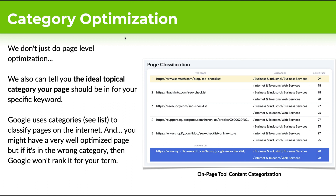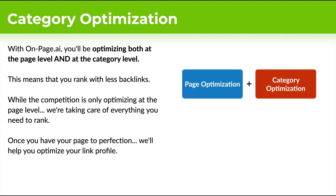We don't just do word optimization — we also do category optimization. We tell you the ideal topical category for your page, which is omitted from a lot of other tools online. This should be front and center, because if you're not in the right category, even if you have the right words, Google could refuse to rank you for your term. We analyze all the pages and tell you the ideal category to be in, and we go one level deeper — we also tell you how to get into that category. You'll be optimizing at both the page level and the category level, giving you better chances of ranking with fewer backlinks.